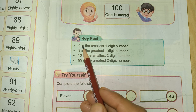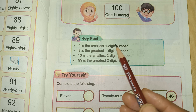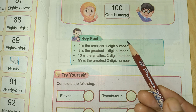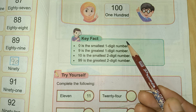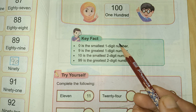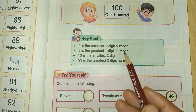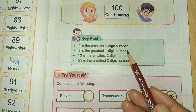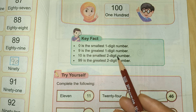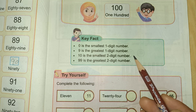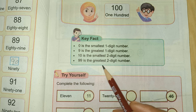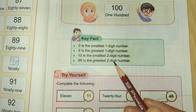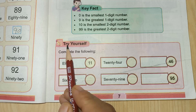Key Fact: Zero is the smallest one-digit number. One-digit numbers are 0 through 9. Nine is the greatest one-digit number. Ten is the smallest two-digit number. Ninety-nine is the greatest two-digit number. One hundred is a three-digit number.